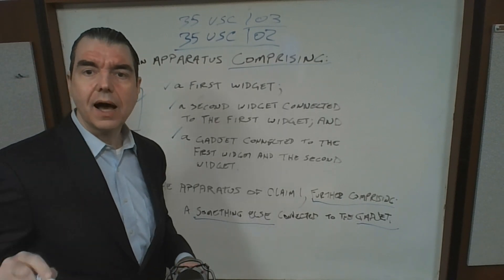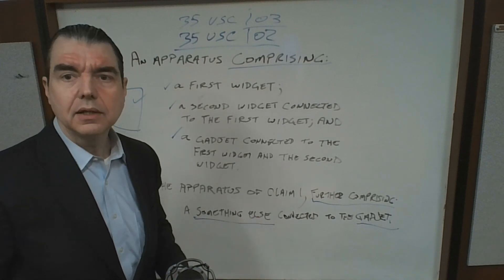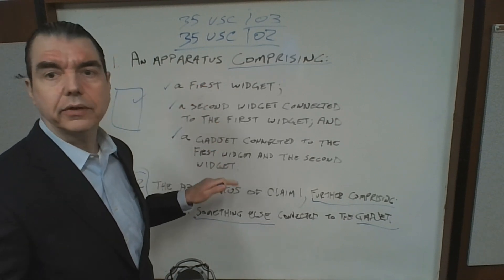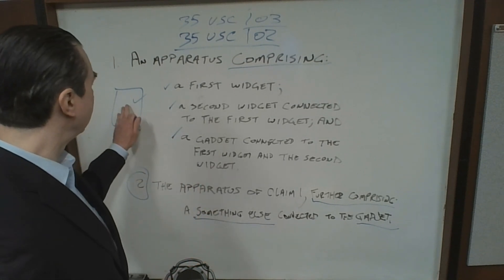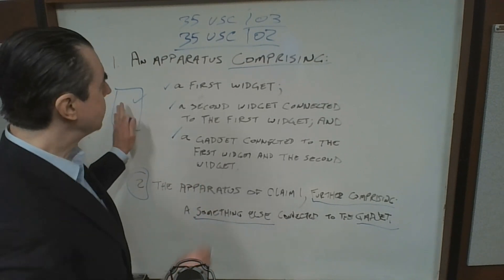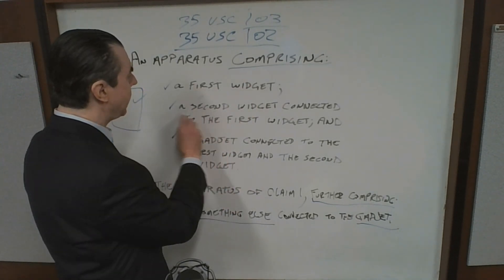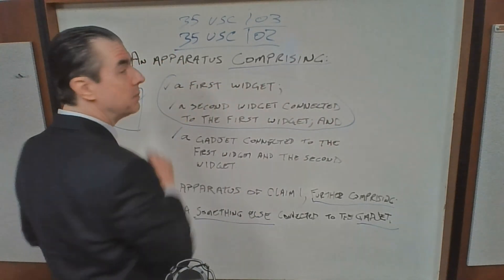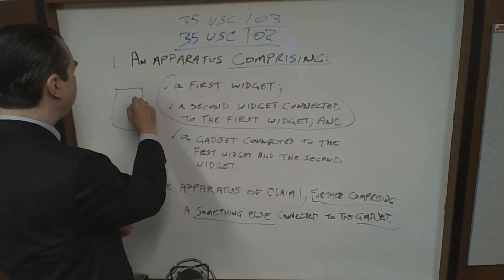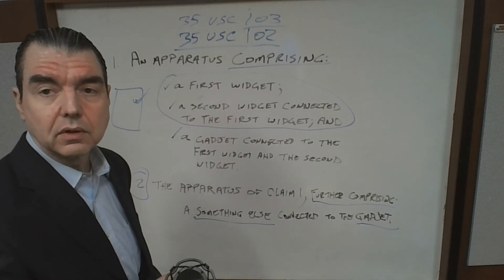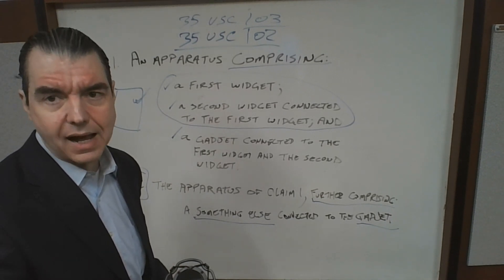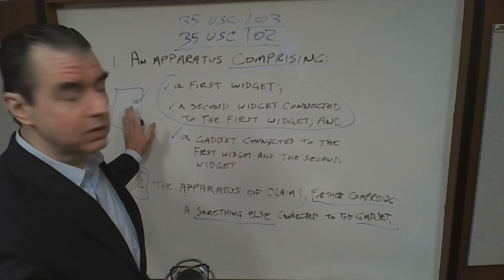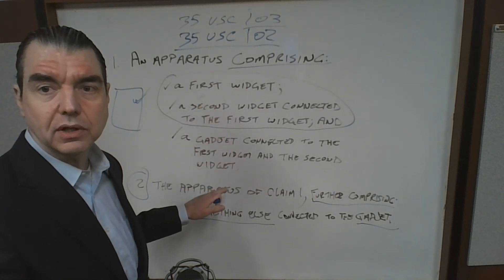In the case of obviousness, the patent examiner found a reference but the reference does not teach all the limitations of your independent claim. For example, the examiner may have found a patent that teaches a first widget and a second widget connected to the first widget, so these two limitations would be taught by the first reference. The examiner can't make a novelty rejection because the cited prior art would have to teach all limitations of your claim, but it doesn't.